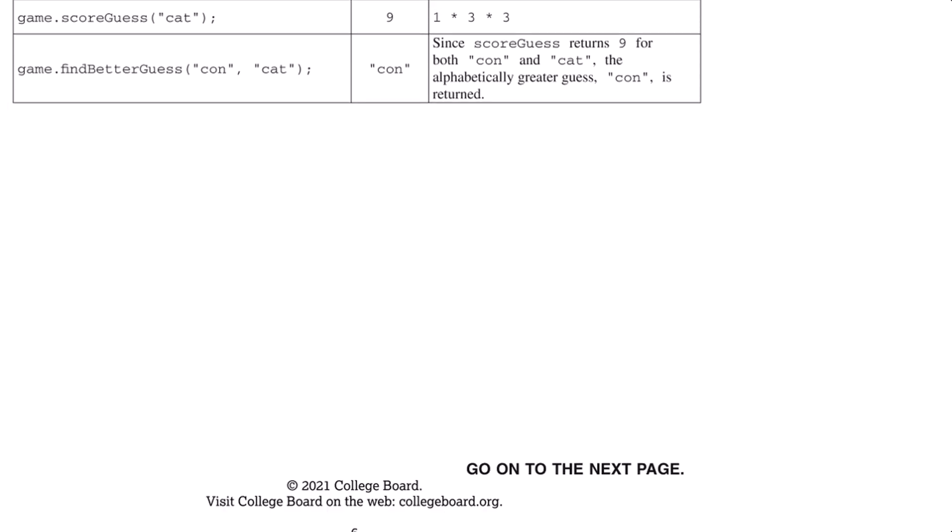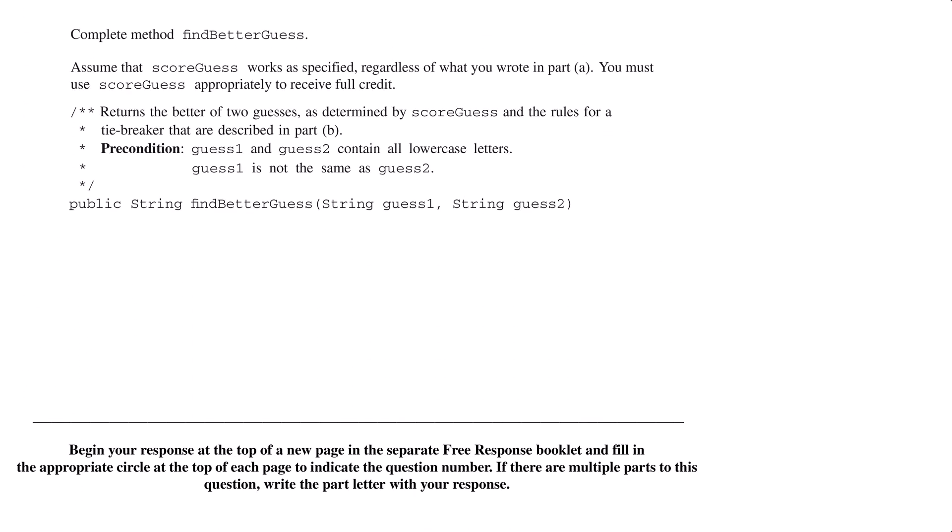We scroll down to the next page and it gives us more information. First, it tells us that we are writing the find better guess method. Second, the preconditions guarantee us that guess1 and guess2 will contain all lowercase letters and that guess1 will not be equal to guess2. Finally, it starts us off with the header of the method.